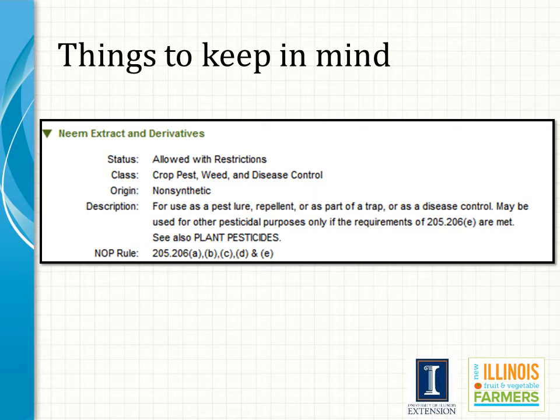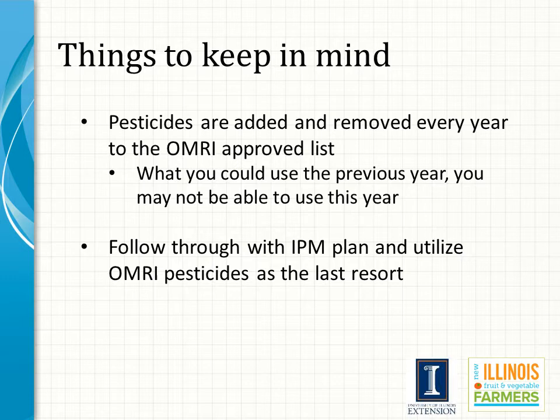Here we have information on neem extract pesticide, taken from the official OMRI website. You can see that the status of the chemical is that it can be used in production, but there are some restrictions in place as to how it can be used. Additionally, there is an NOP rule you would want to look up that may explain more about those restrictions. Some OMRI approved pesticides are added and removed each year — what you could use the previous year, you may not be able to use this year. It is still important to contact your certifying agency when considering a pesticide, as organic pesticides have an important role within an integrated pest management plan.